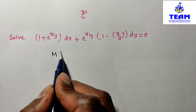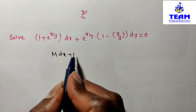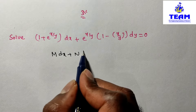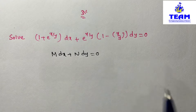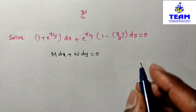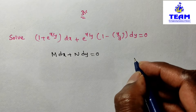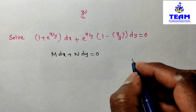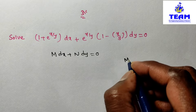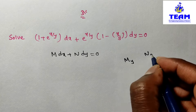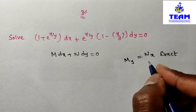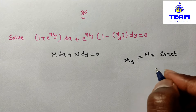By observation, we can say the given differential equation is in the form of M(x,y) dx + N(x,y) dy = 0. If the given differential equation is in M dx + N dy = 0 form, we have to verify whether it is exact or non-exact. If ∂M/∂y equals ∂N/∂x, then we say it is exact; if both are not equal, then it is non-exact.